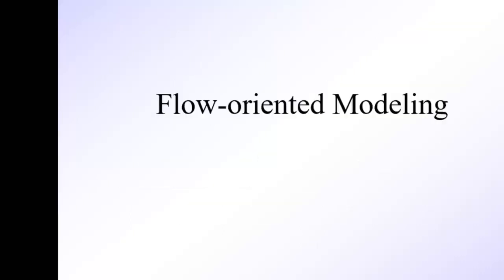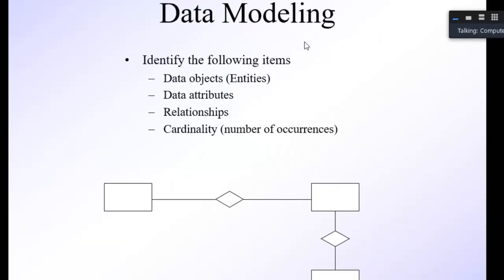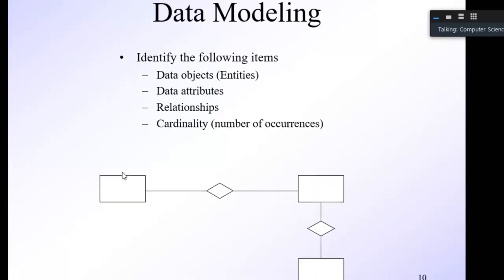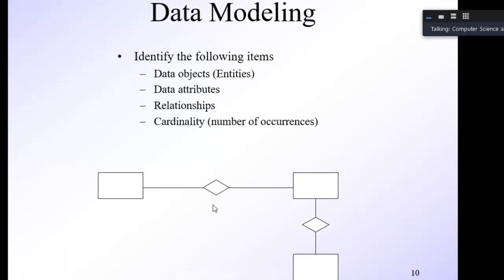In flow-oriented modeling there is data modeling. You will identify the data objects — meaning the entities — then data attributes, data features, relationships between attributes, and cardinality (number of occurrences). This is similar to the ER diagram studied in DBMS. For example, if you are using a student database, the information in the student table — like student name, roll number, contact number — these are the data objects or entities. After data modeling, you go to the data flow diagram, then the control flow diagram.